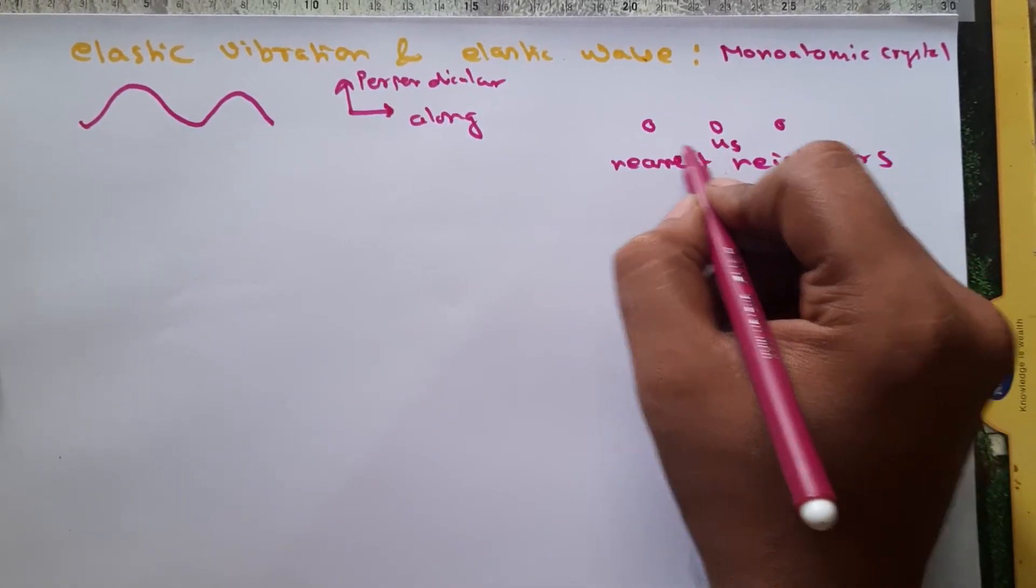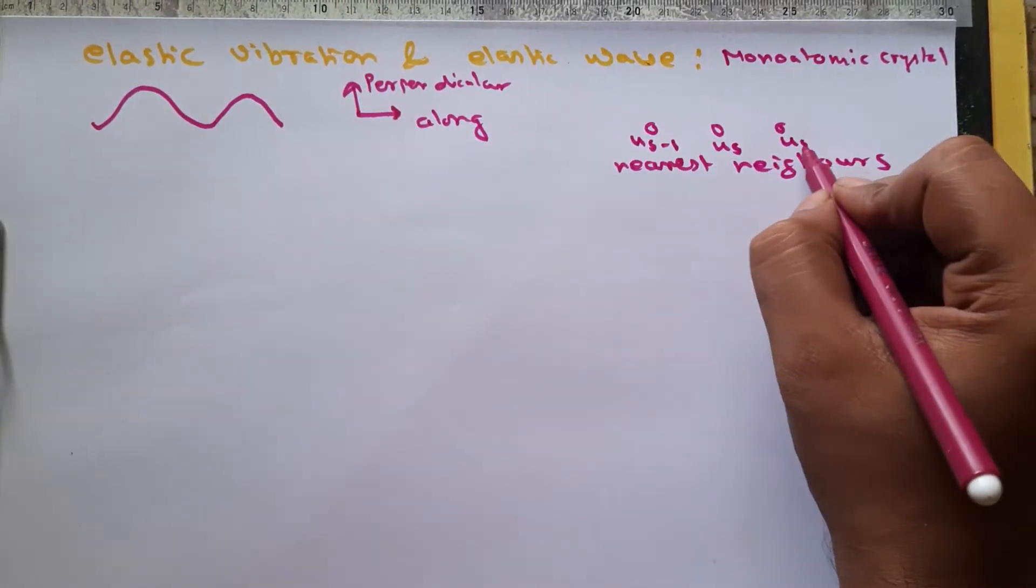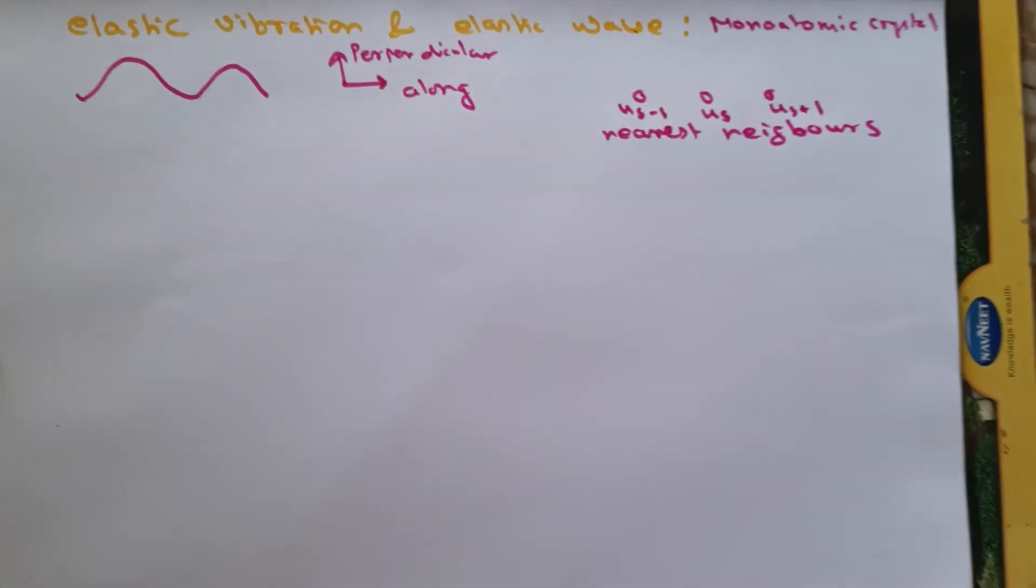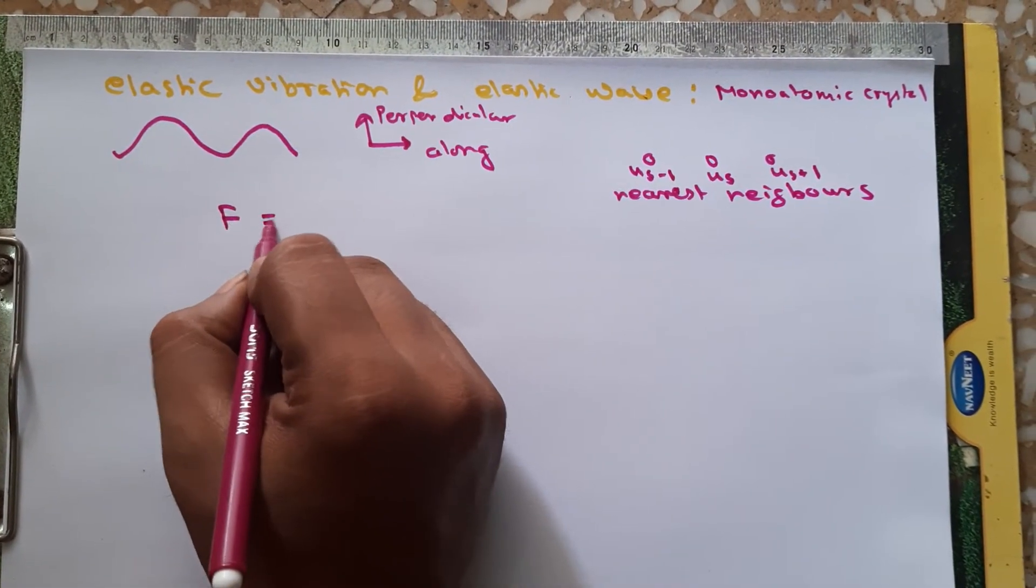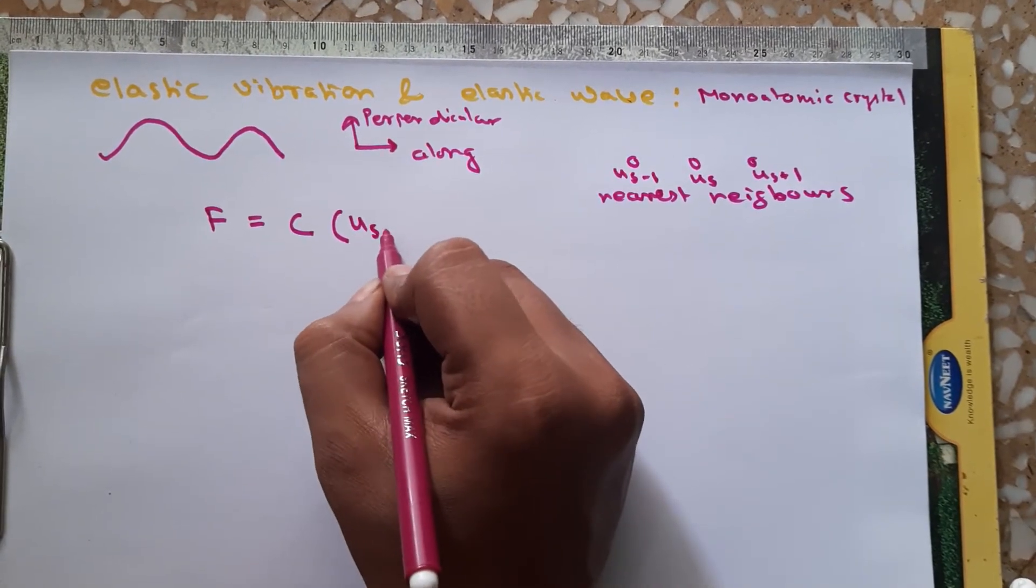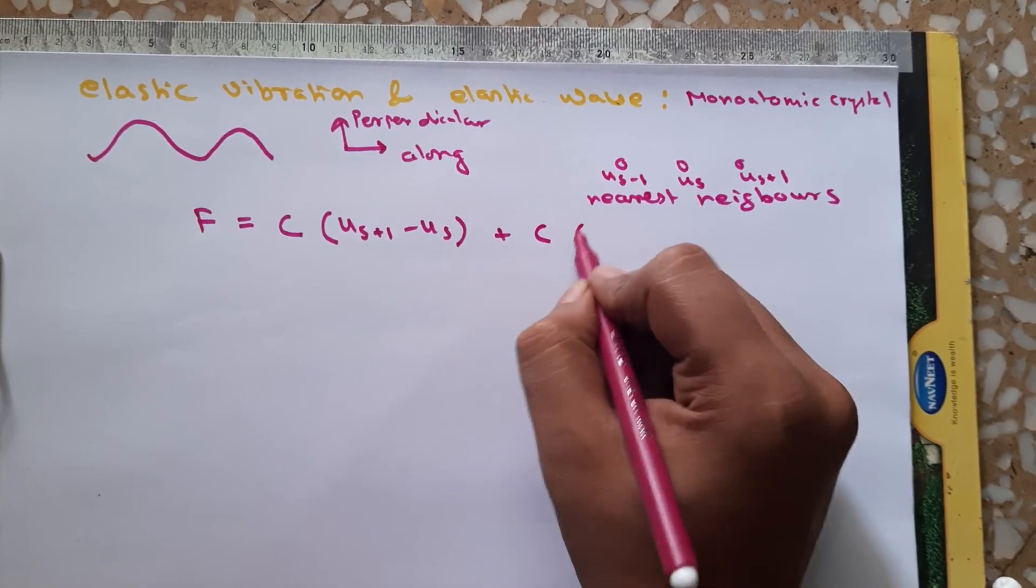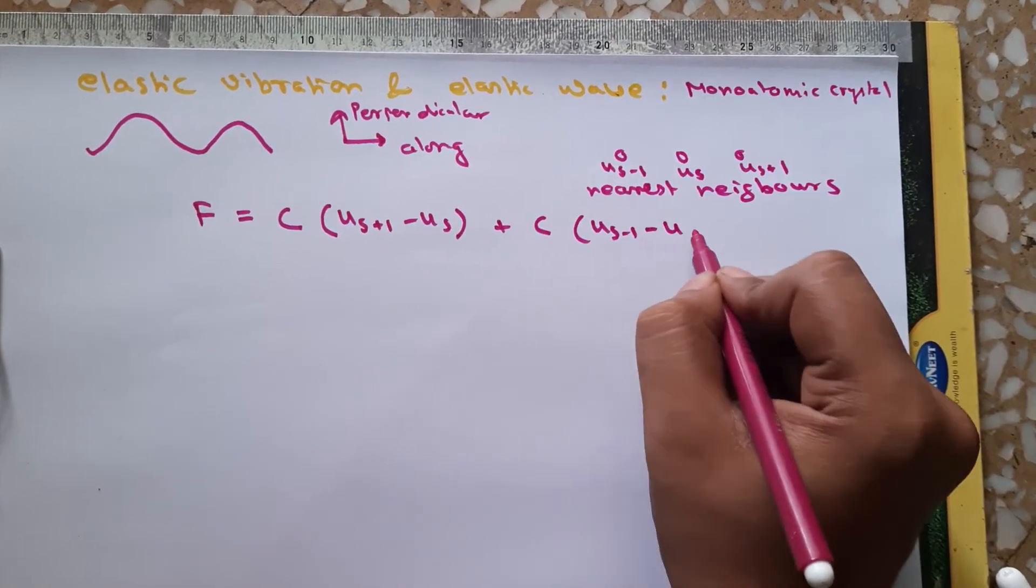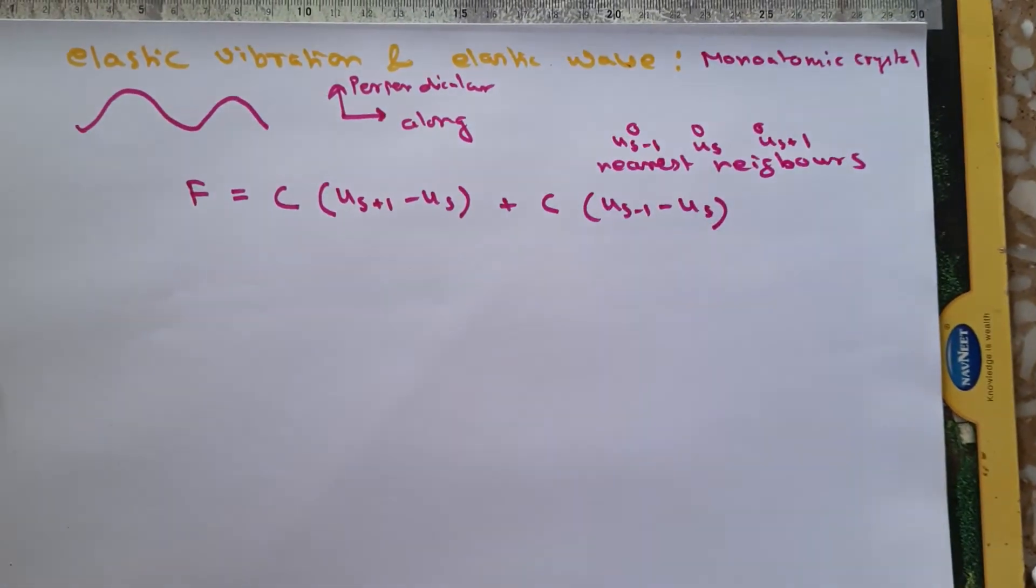So suppose this atom has a displacement u_s due to the vibration, this atom has u_{s-1} and this atom has u_{s+1}. So the net force will be C(u_{s+1} - u_s) + C(u_{s-1} - u_s). This net force is exerted on this atom due to this vibration.